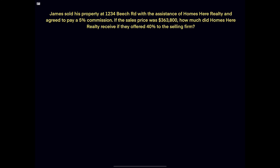Now that we've read the problem, we know our first step is to make a t-bar. And the easiest thing to place into a t-bar is the rate. The first rate that we come to is the 5%, and what we want to do is label that percent — that's going to be our rate of commission.